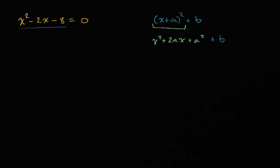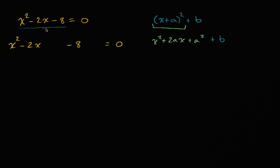What I'm going to do — and this is what you typically do when you try to complete the square — I'll write x squared minus 2x, leave a little gap, then minus eight, leave another gap, and say equals zero. I just rewrote this equation but gave myself some space so I can add or subtract things to get into that form.